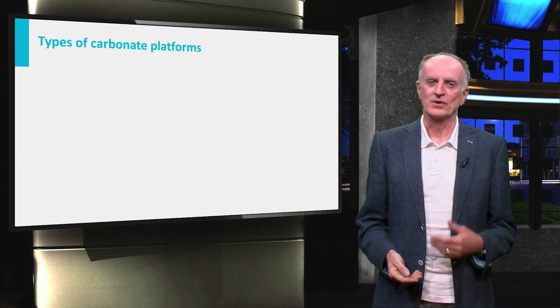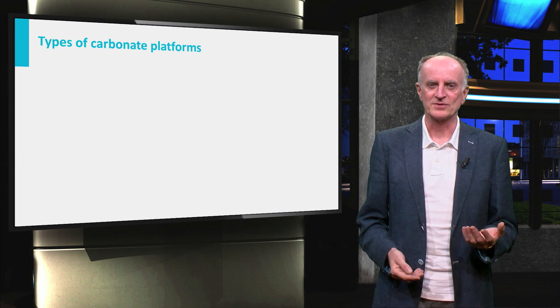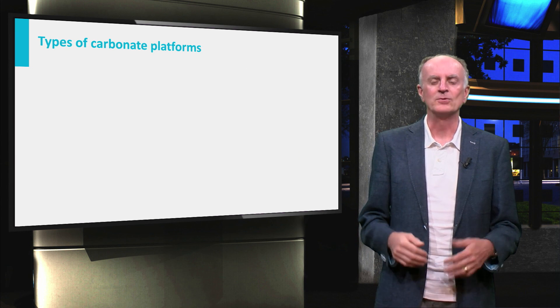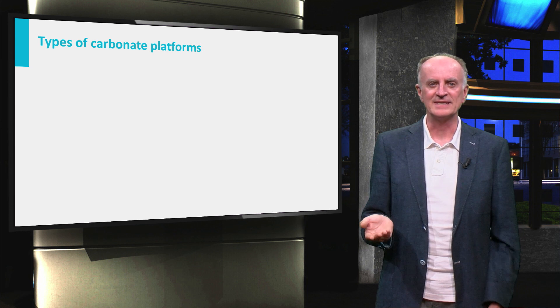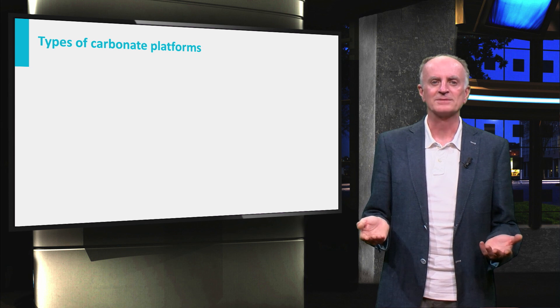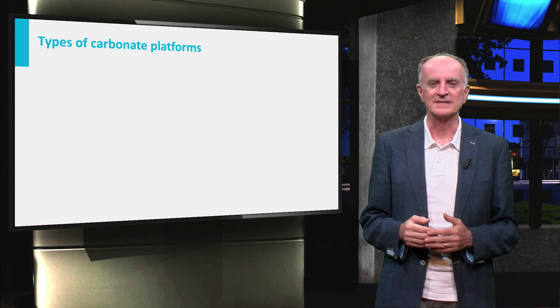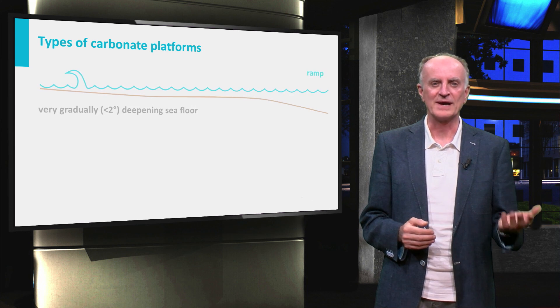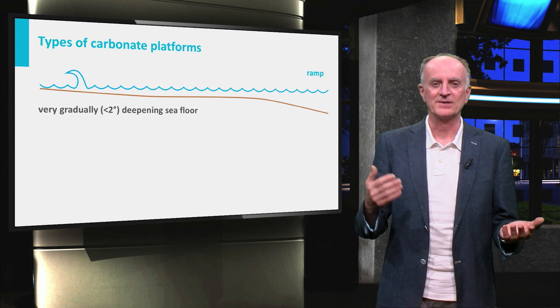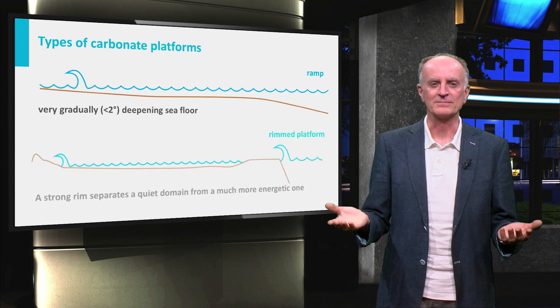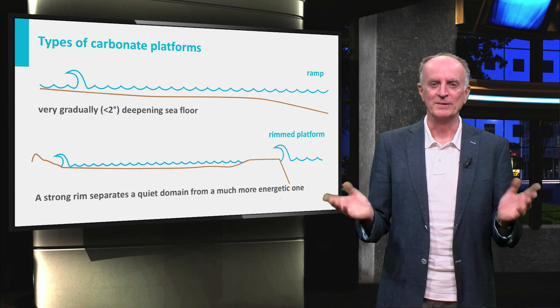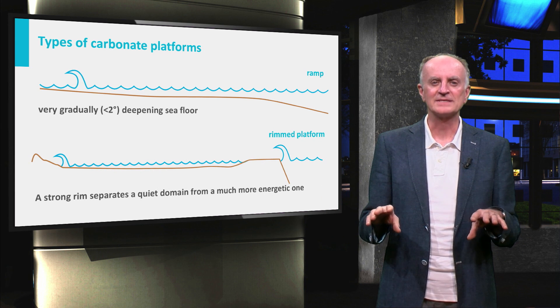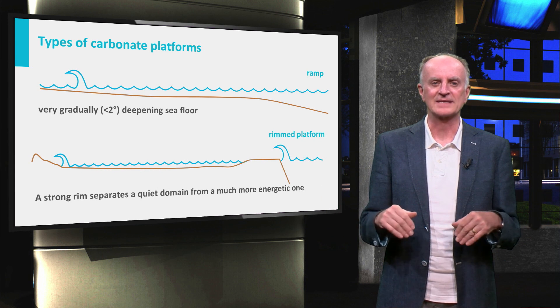Combining knowledge on carbonate production processes and oceanographic settings, we define two main types of carbonate settings: carbonate ramps and rimmed platforms. We will look at these systems in the next clips.